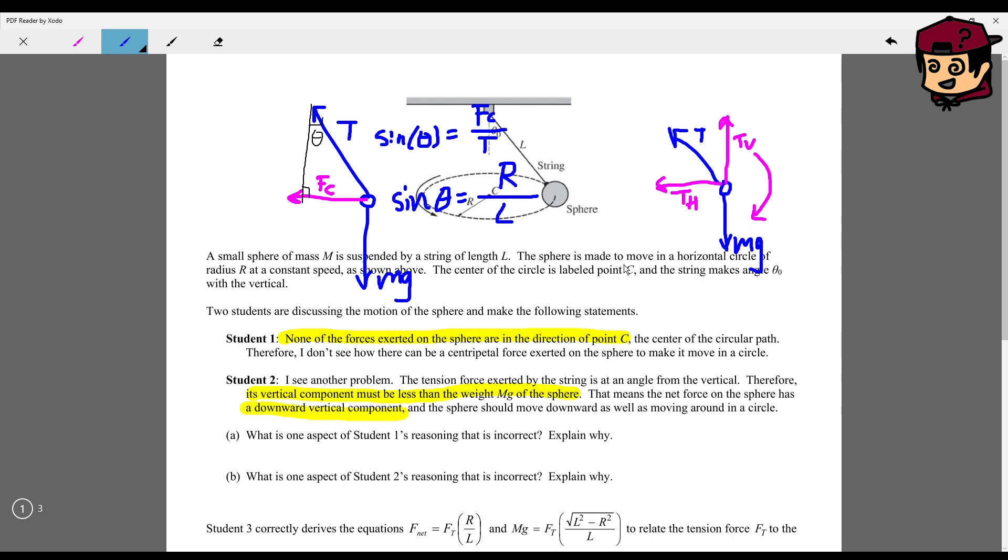So sine theta equals r over l. Now, the tension force here, essentially t equals sine theta fc. Right? And that gives us this here. Sine theta equals r over l fc. Well, we'll just rearrange this equation now.